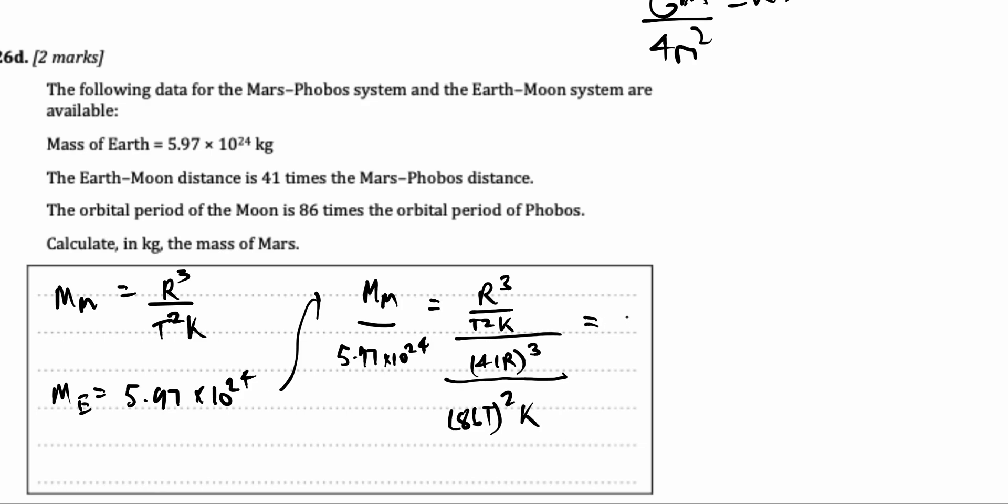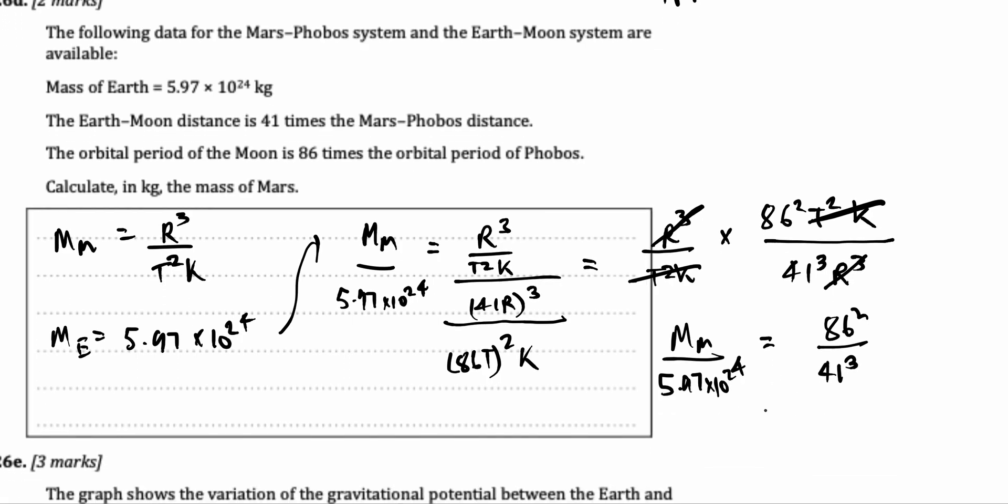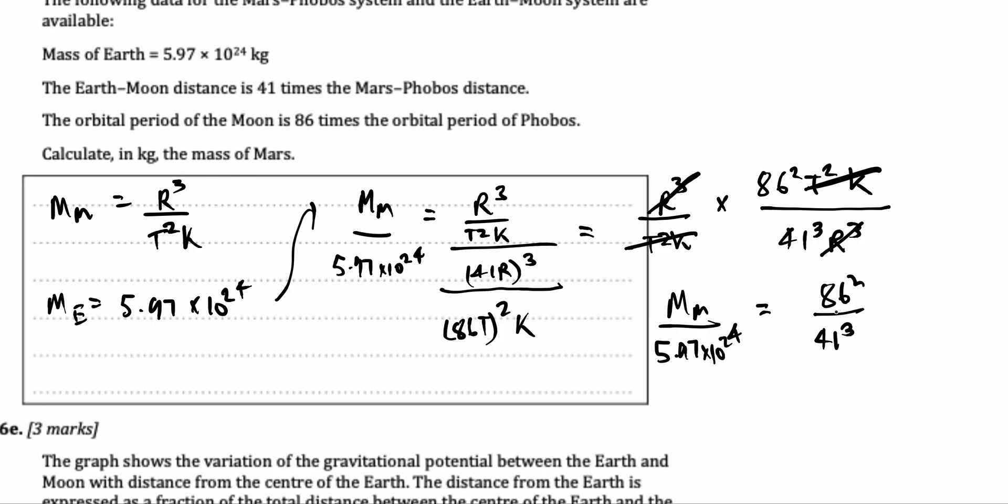So, let's again solve this complex fraction. We get r cubed over t square k times, take the reciprocal, which would be 86 square t square over 41 cubed r cubed. Let's do some cancelling out: t square k, t square k, r cubed, r cubed. So we know the mass of Mars over the mass of the Earth, which is 5.97 into 10 to the power of 24 is equal to 86 square over 41 cubed, but we want to find the mass of Mars. So, let's multiply this right side times the mass of the Earth to isolate the mass of Mars.